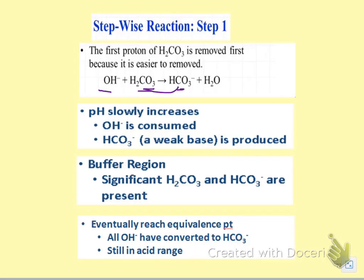This gets consumed as it gets added. So I've got the weak acid and its conjugate base, which makes a buffer, which means I'm going to have that slow increase in pH.